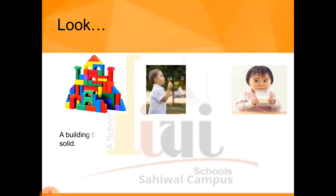Look at the pictures. The first picture shows a building block — it is a solid, made up of solid material. The second picture shows air in bubbles — the air filled inside a bubble is basically a gas. The air filled in balloons is also a gas. Milk is a liquid — if you take the example of a glass of milk, the milk in the glass is liquid, and the glass itself is a solid.